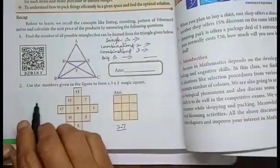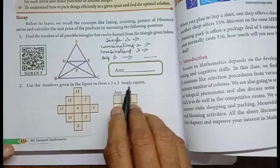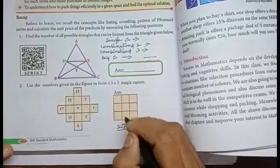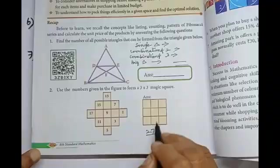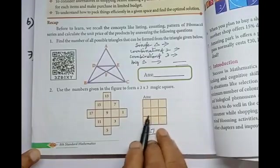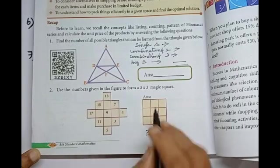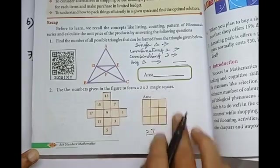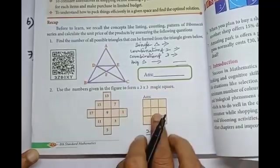Next, second one. Use the numbers given in the figure to form three into three magic square. This one, row, this one, column. That is, total of each row should come 27. Each column, total of each column should come 27. Like that, you find and fill the three into three magic square from this numbers only.